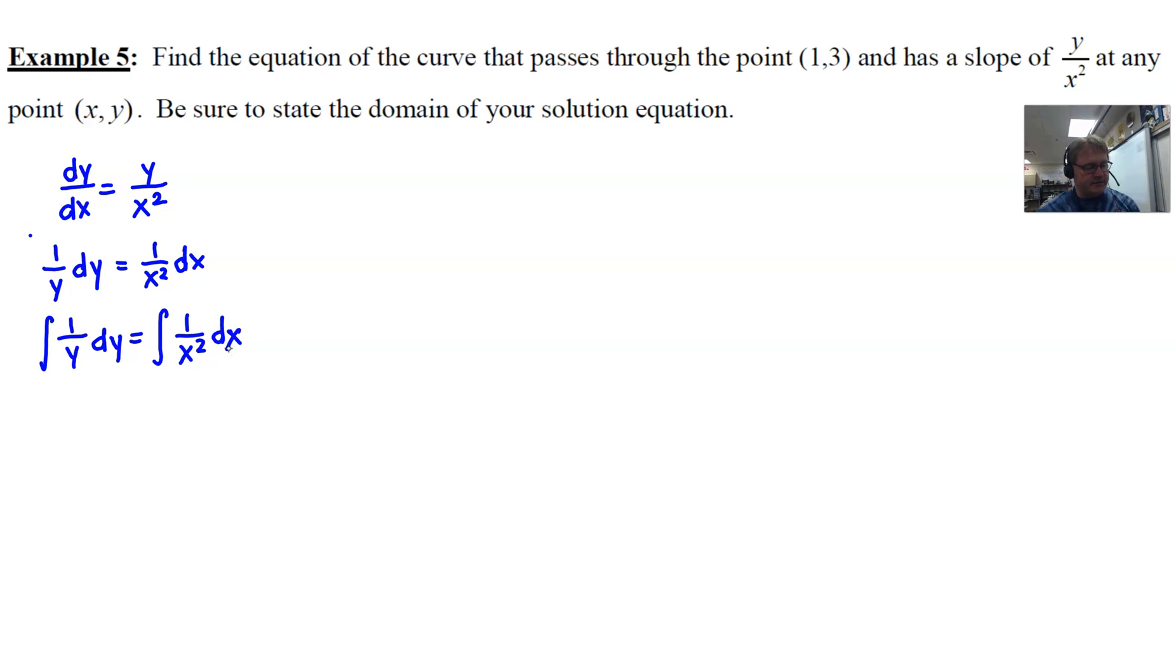The antiderivative of one over y, this is not the first time we've seen this in this particular topic, that's going to be the natural log of the absolute value of y. Then we look at this one over x squared and we think, that's going to be the natural log of the absolute value of x squared, right?